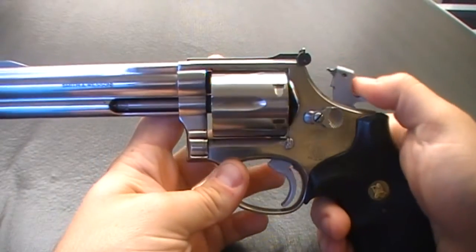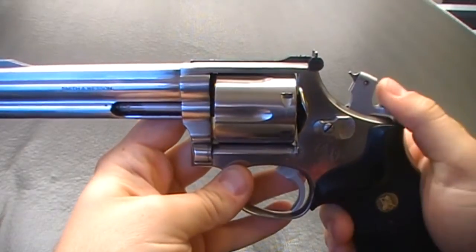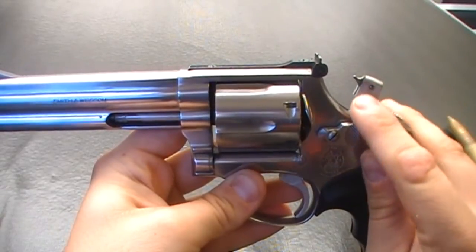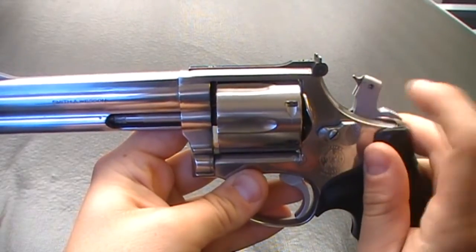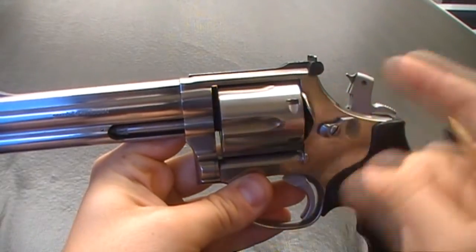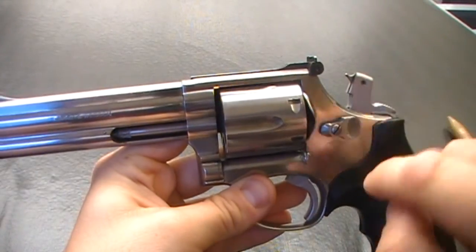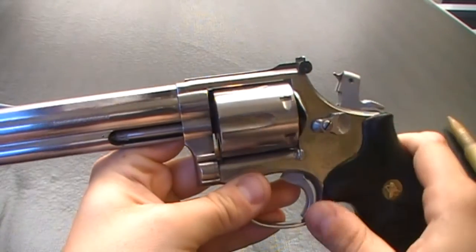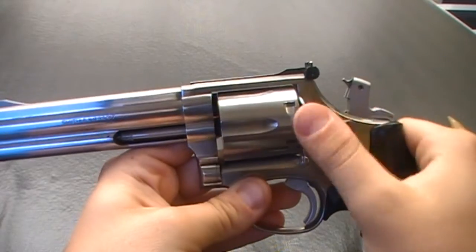It's a double action single action revolver. You can see the moving the thumb on the thumb rest here. Moving it back. The pre-locked ones have the firing pin on the hammer. Or else it would be inside the frame here. And this would be flat. And there will be that pin right here. As it strikes it will hit it. But this has the firing pin on the hammer.